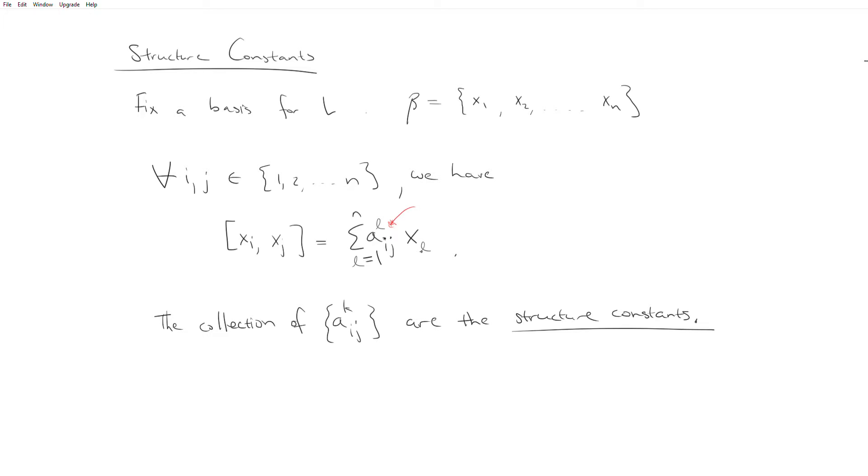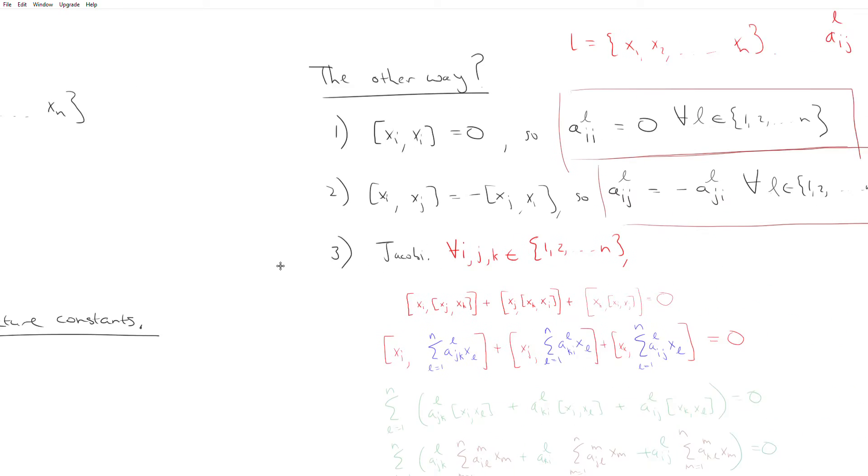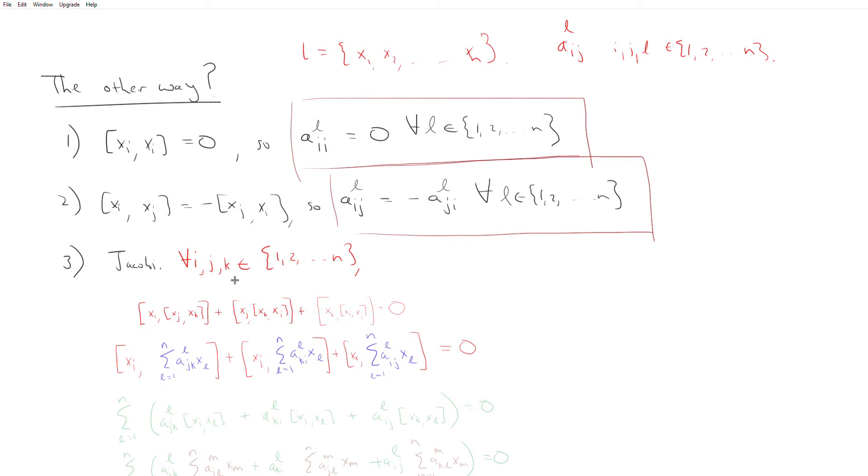So I said a valid set of structure constants just a moment ago, and so the question is, when is a set of structure constants valid? Well, obviously it's valid if you start with a Lie algebra and then you produce your structure constants, but what about the other way? What if you gave me a set of structure constants? How could I deduce if those correspond to a Lie algebra?